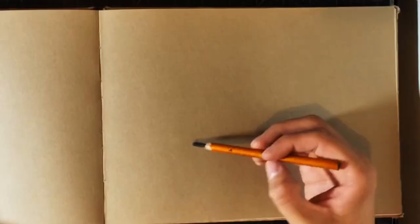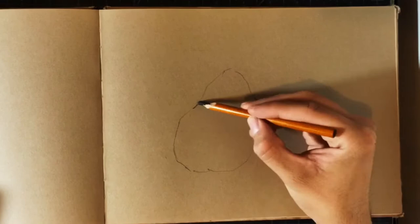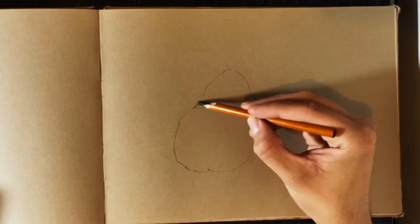Now let's continue with charcoal. I begin with a 2B pencil outlining the pear and showing the emphasis on form like we did in the other drawing.